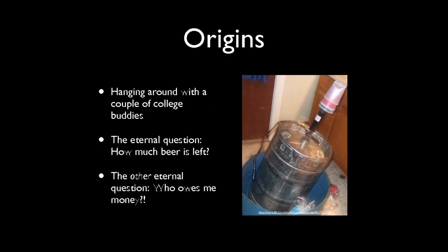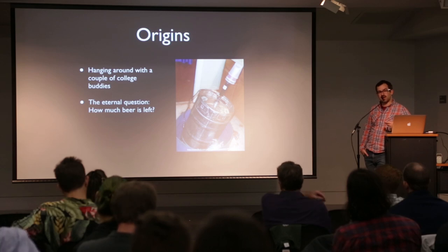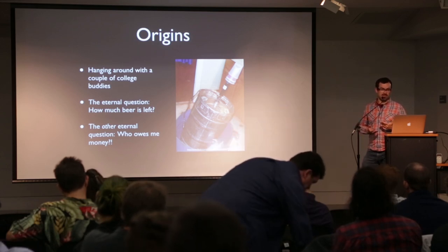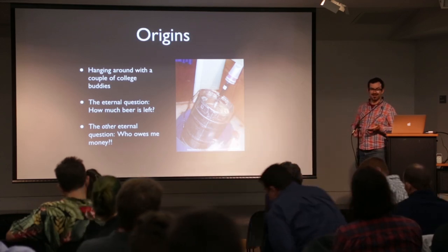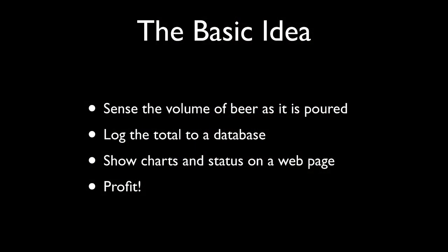So, origins. Back in 2003 I was between undergrad and grad school, had no job, was drinking beer somewhat, and I had a couple of roommates. We were all very cheap, so we had this eternal question: how much beer is left? And then the other eternal question: who's been drinking more than their fair share? My other roommate built an expense tracking thing for who's paid what. The basic idea I was thinking of was: sense the volume of beer as it's poured from a draft beer system, log it to a database, and show some charts and stats.